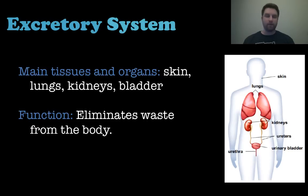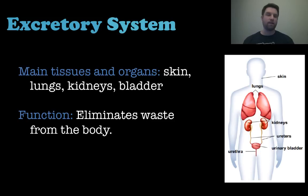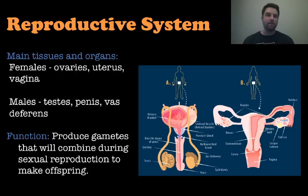Speaking of coming out, we have the excretory system. This includes skin, lungs, kidneys, and bladder. The job of this system is to eliminate all of the waste from your body, in the form of feces, urine, or anything like that.